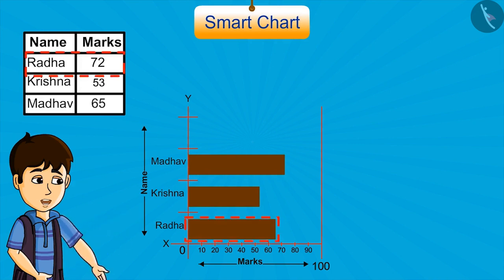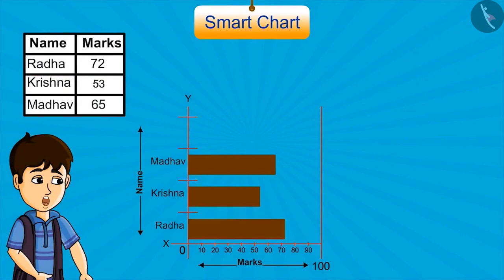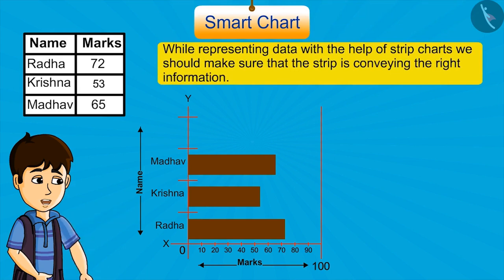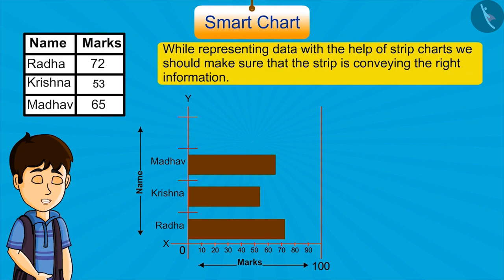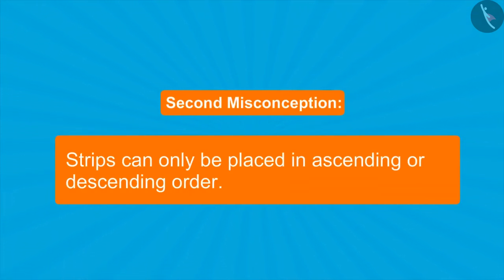This is very unfair with Radha. We cannot show wrong data like this. This correct chart is perfect because it is showing the correct marks scored by students. So kids, while representing data with the help of strip charts, we should make sure that the strip is conveying the right information.